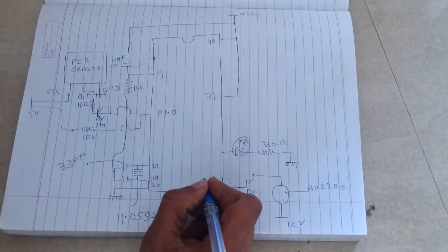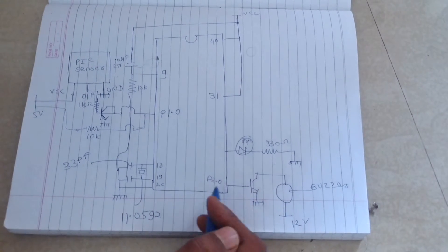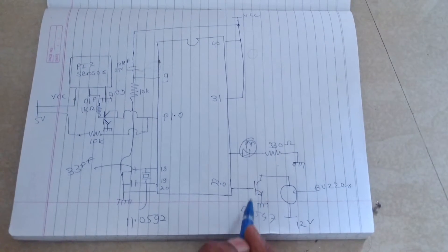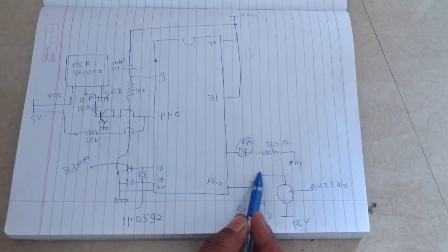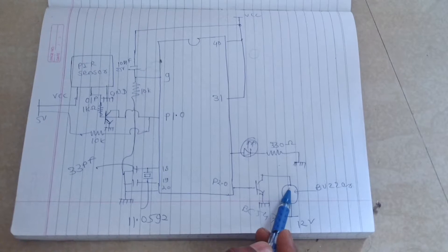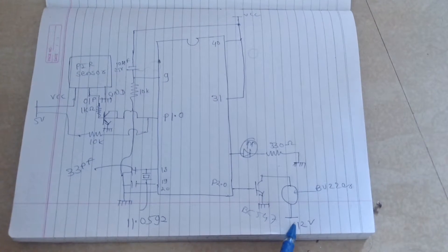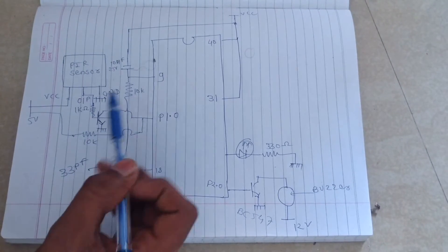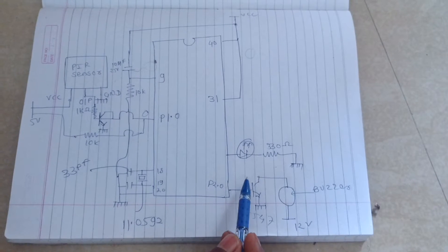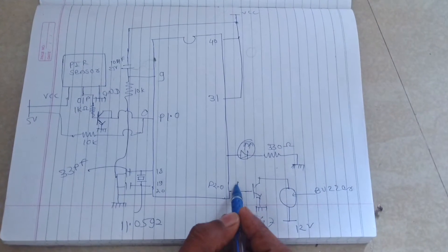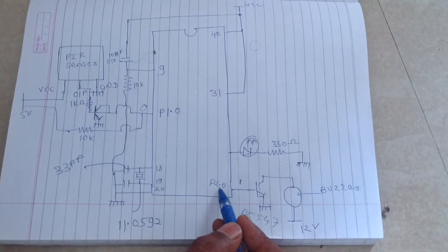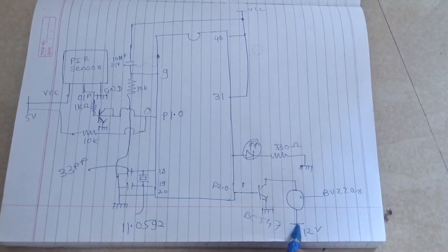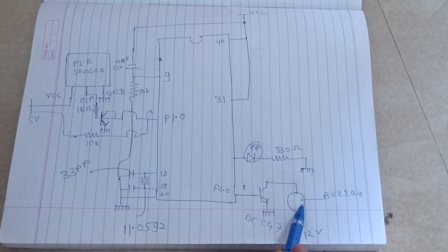This is the NPN transistor BC547. It is connected to P2.0 — the emitter terminal is connected to ground and the collector is connected to the buzzer, with the other end connected to a 12-volt supply. When motion is detected, logic level 0 is given to the controller. According to the programming, the controller drives P2.0 high, the transistor turns on, and the 12-volt supply connects to ground, so the buzzer turns on.